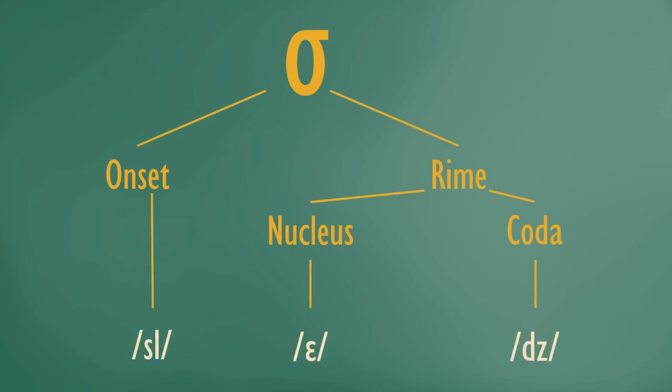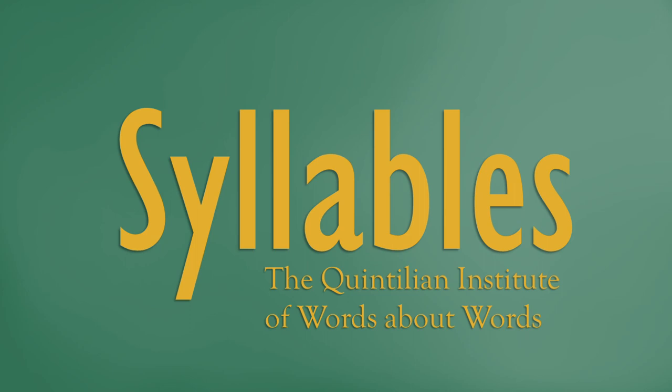So now, if you're ever in a dire emergency and need to tell someone what a syllable is made of, you can. And it's all thanks to your friends at the Quintilian Institute of Words About Words. Now that we have a good understanding of syllables under our belt, I suppose it's time to start at the beginning, or one might even say at the onset.